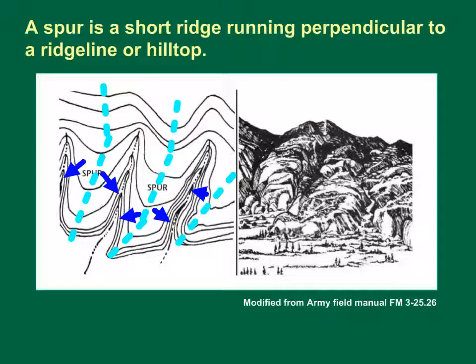In most cases, a draw will be situated to the left or right of the spur, or in a line between two spurs. The blue arrows superimposed on this figure represent potential flow directions. The light blue dashed line represents the watershed divide following the nose of each spur.